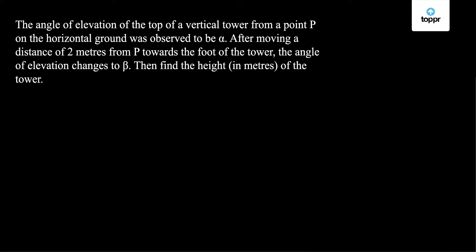The problem is: the angle of elevation of the top of a vertical tower from a point P on the horizontal ground was observed to be alpha. After moving a distance of 2 meters from P towards the foot of the tower, the angle of elevation changes to beta. Then find the height in meters of the tower.